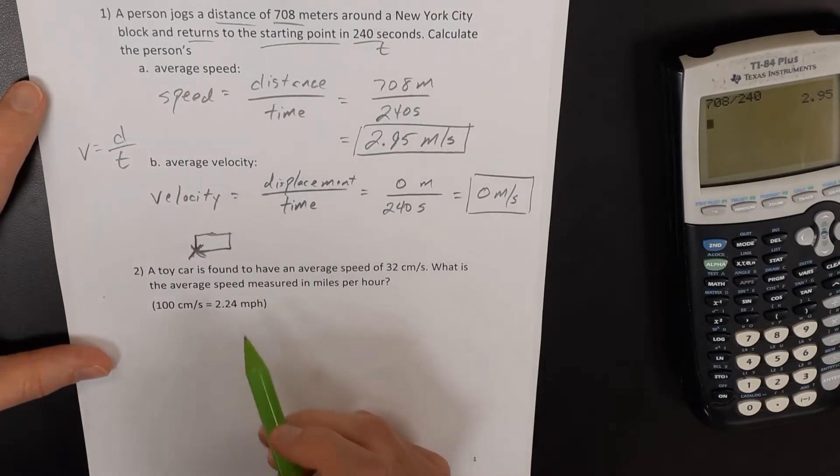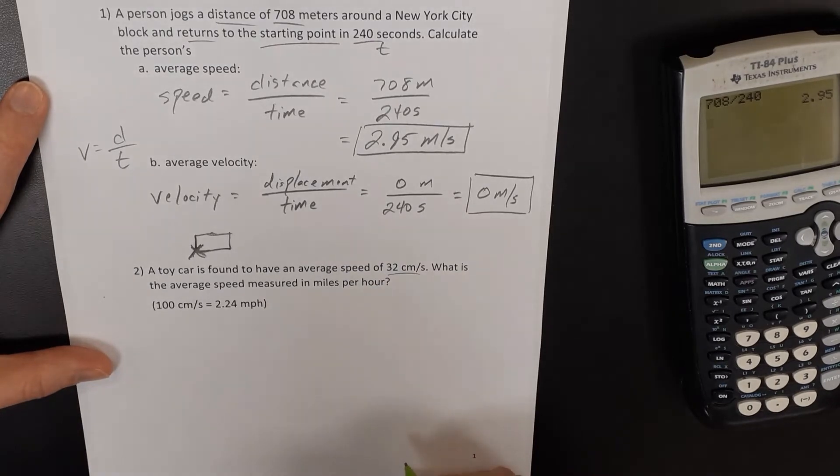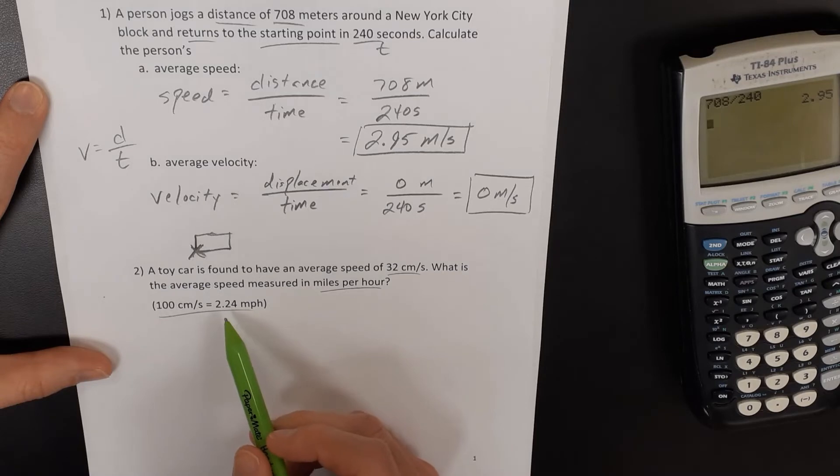All right, our second question says a toy car is found to have an average speed of 32 centimeters per second. What is the average speed measured in miles per hour? And we're given a conversion factor here that 100 centimeters per second equals 2.24 miles per hour.